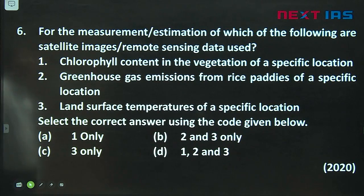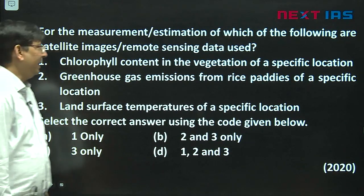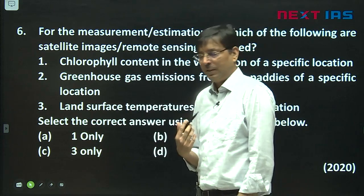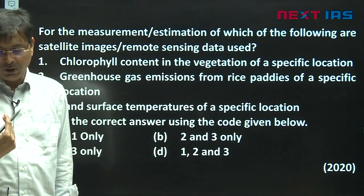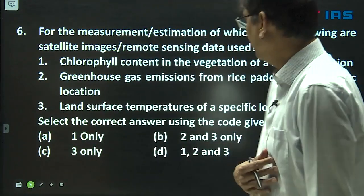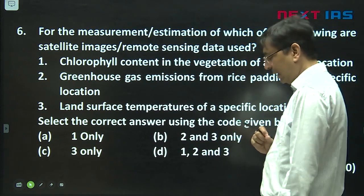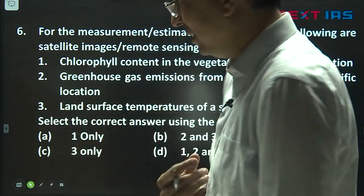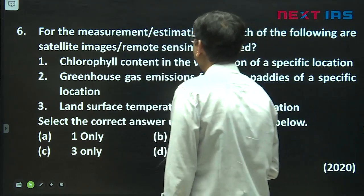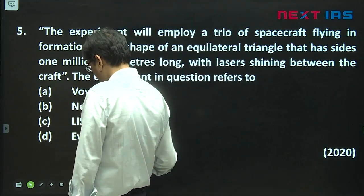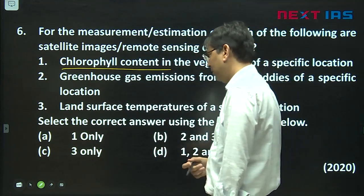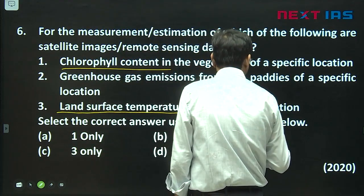Moving to the next question: for measurement, remote sensing satellite data is used. Remote sensing satellites are Earth observation satellites used for various purposes. We can estimate forest cover and crop coverage — in both cases we are looking for chlorophyll content. Land surface temperature of a specific location can also be measured, because they can pick up reflected sunlight.